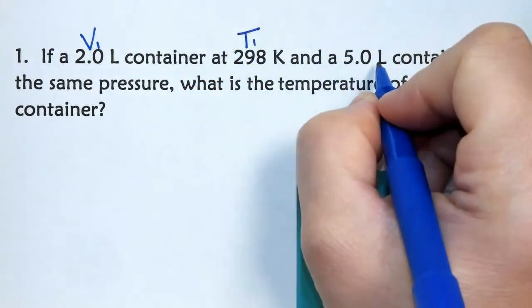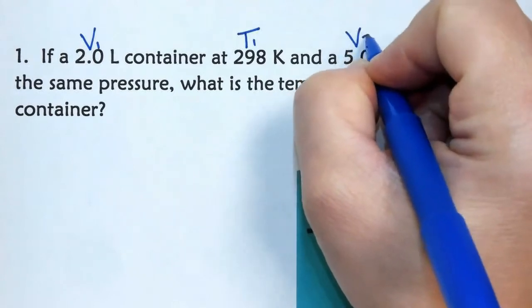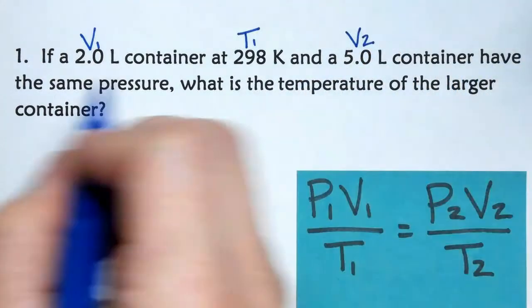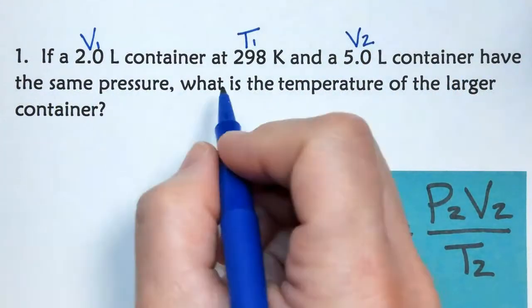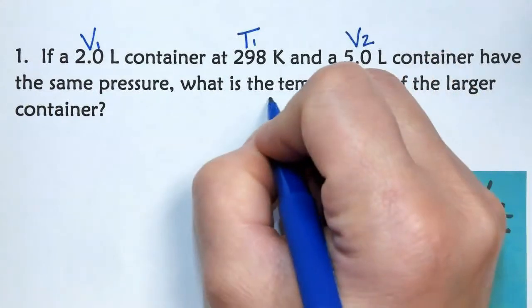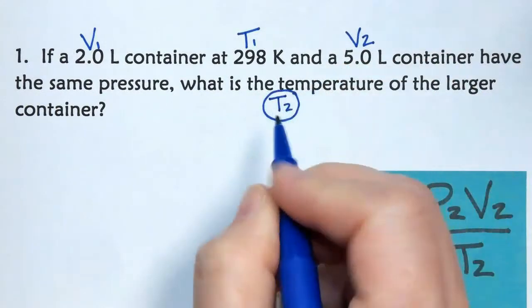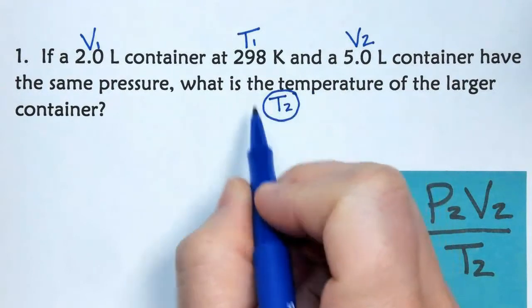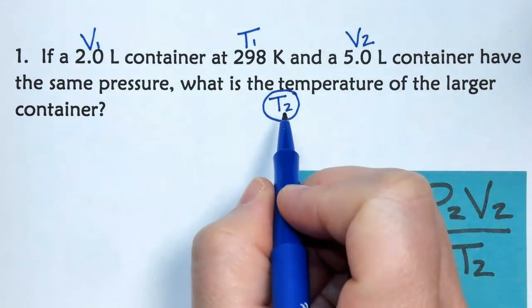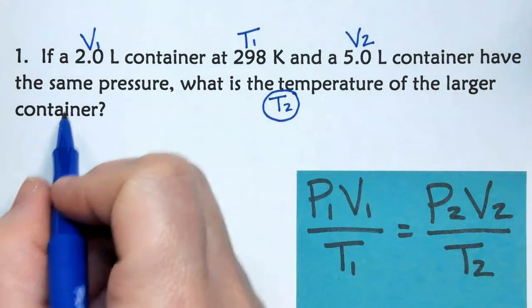And this is now my second volume, so we'll call that V2, and it has the same pressure. What is the temperature? So because what is the temperature is what I'm asked to find, I'm going to write T2, and I'm going to circle it, so I know that's what I'm trying to solve for, of the larger container.